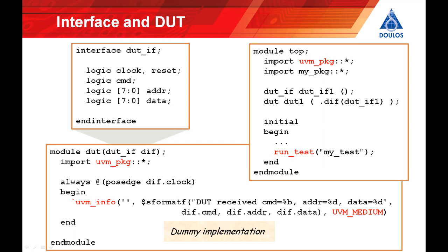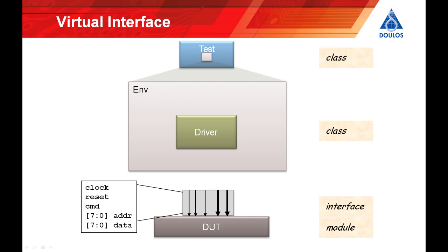Then comes the top-level module. Just as in the previous Hello World example, in the top-level module we're instantiating the interface and the Design Under Test. Then we've got a procedure which calls run_test. Run_test instantiates the entire class-based UVM verification environment using the factory mechanism, then runs through the standard UVM phases: starting with the Build phase that builds all the UVM components, then the Connect phase that connects them together, and eventually the Run phase — which is when events happen and time passes.